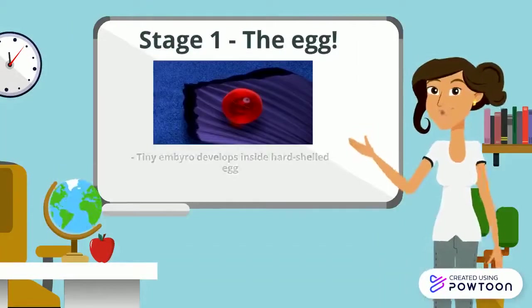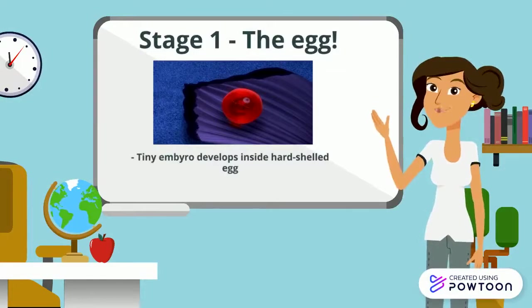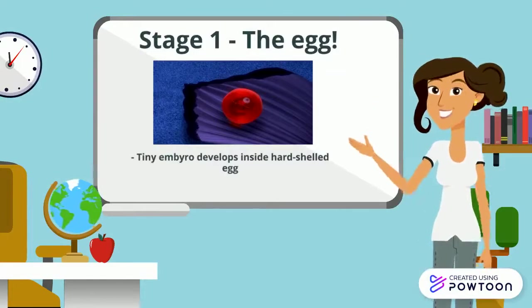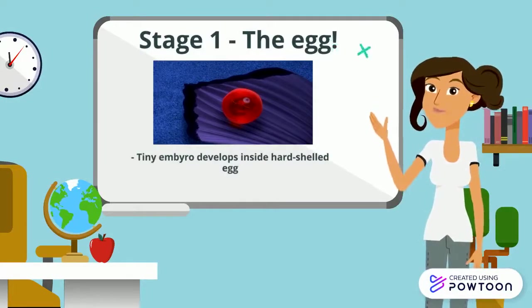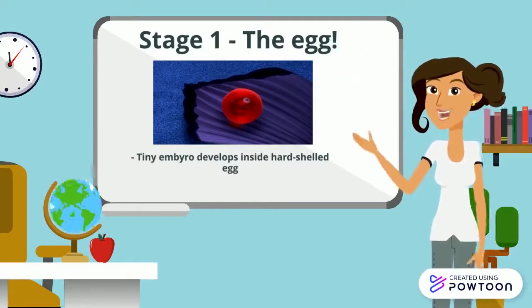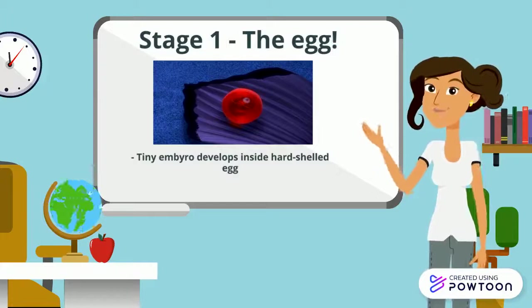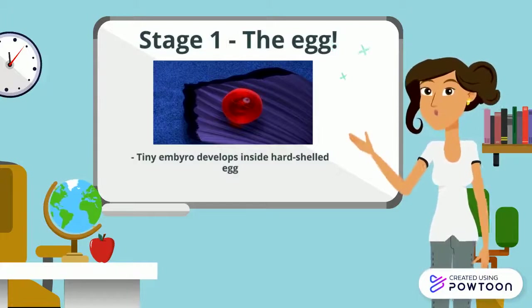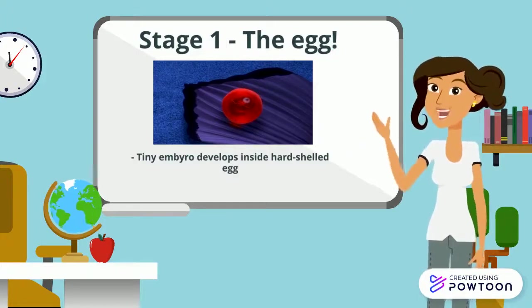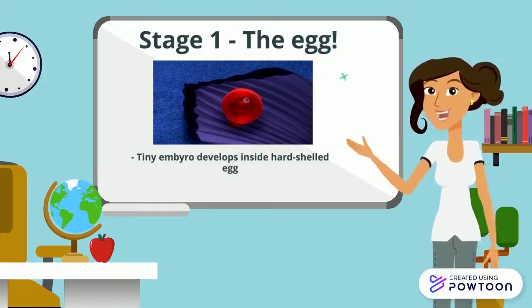Stage 1: the egg. In this stage, the tiny embryo develops inside the hard shell egg. During this process, the embryo develops different organs of its body.